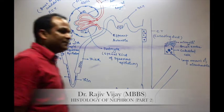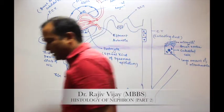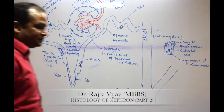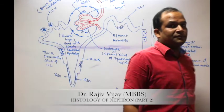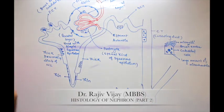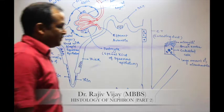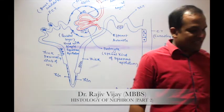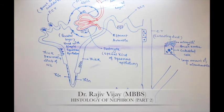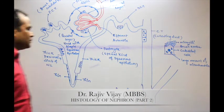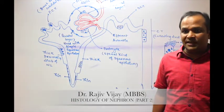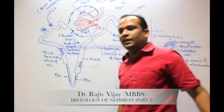To remember: the whole nephron is lined with cuboidal epithelium except at two places where simple squamous epithelium is present — Bowman's capsule and the thin segment of Henle's loop.